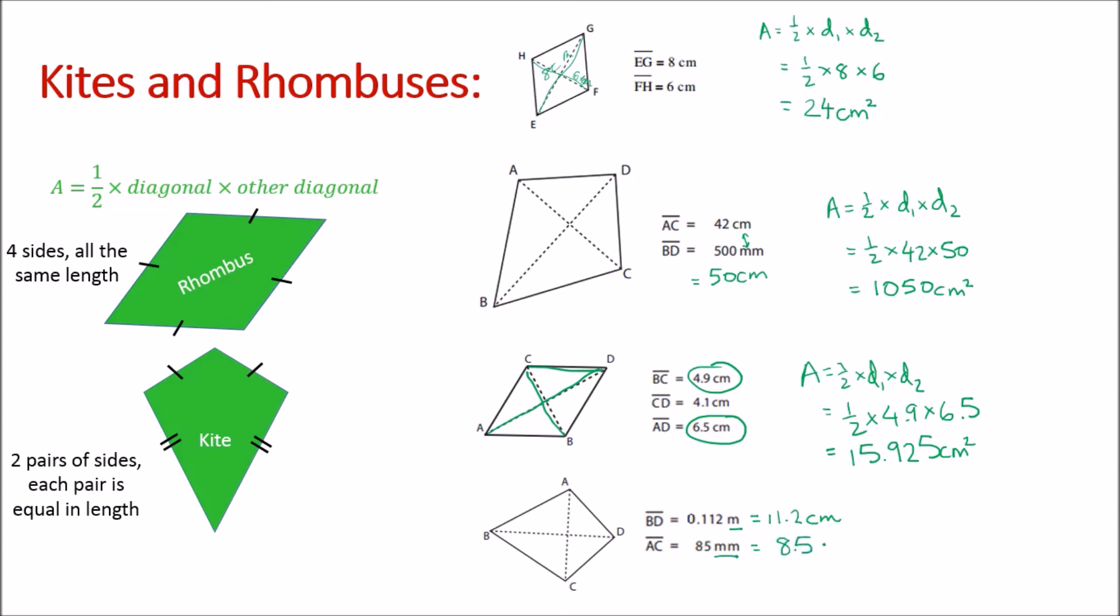You can see that this is a really good unit to work with because both of our measurements are not too big, not too small. So area equals half times d1 times d2, which is half times 11.2 times 8.5.